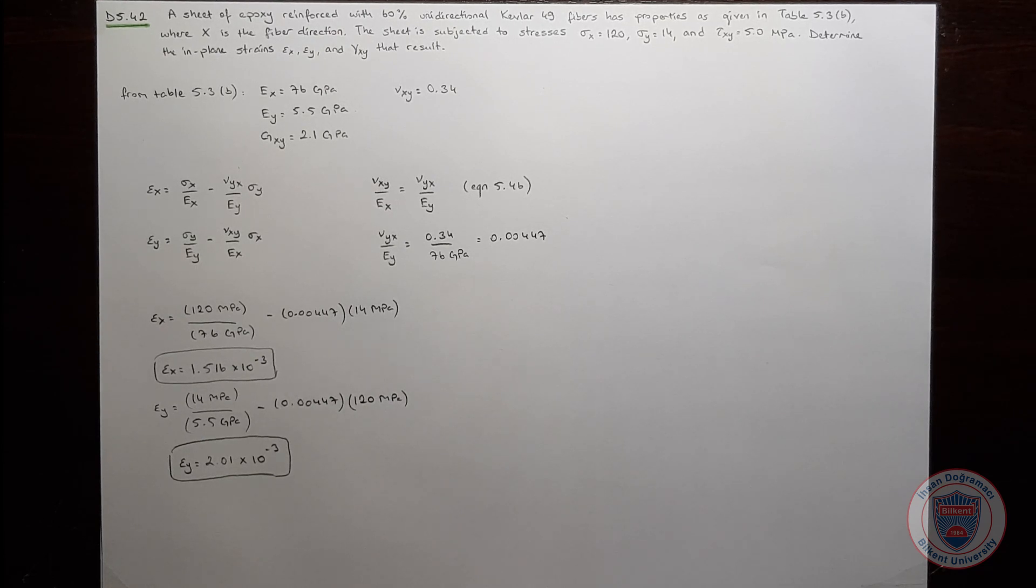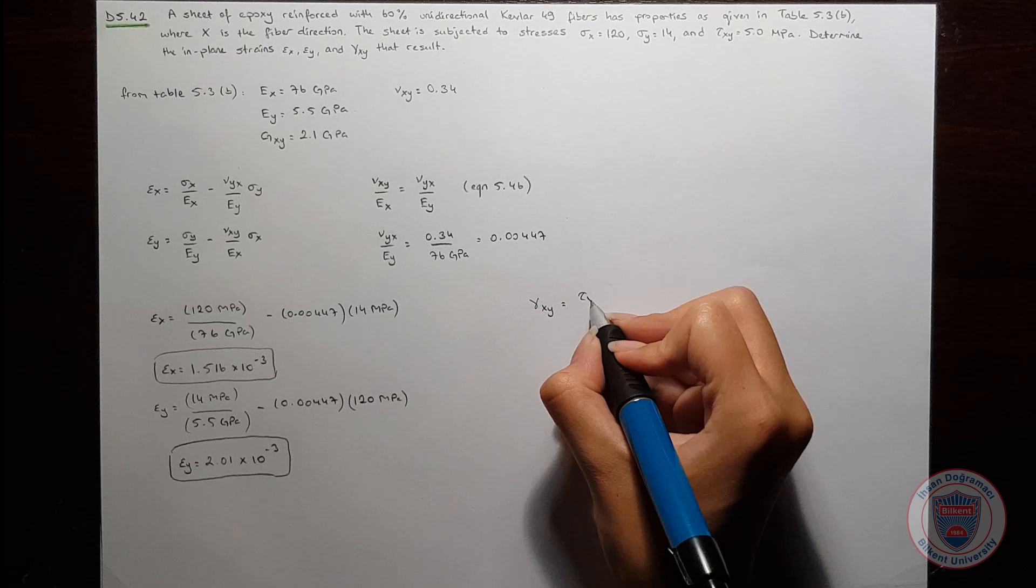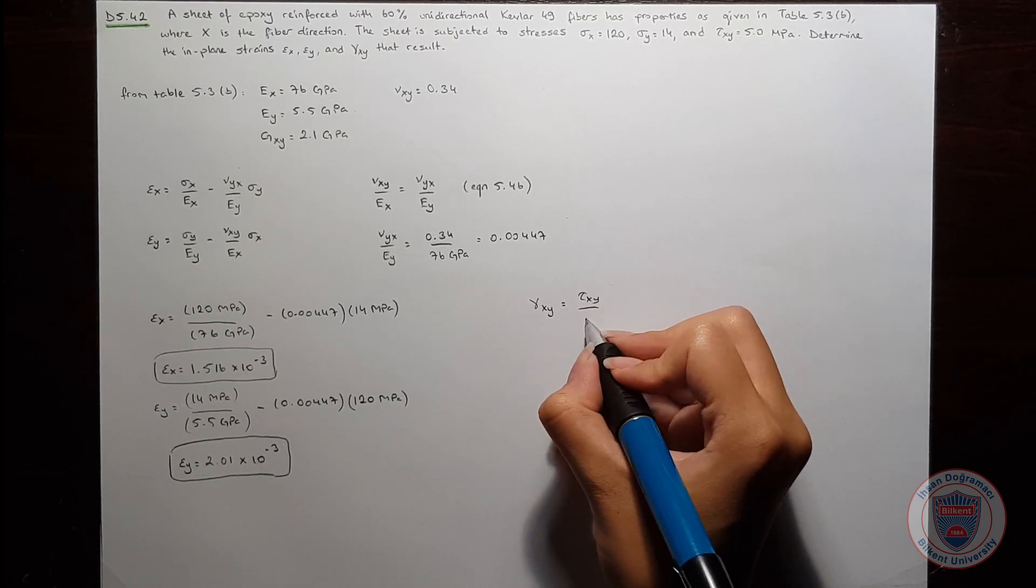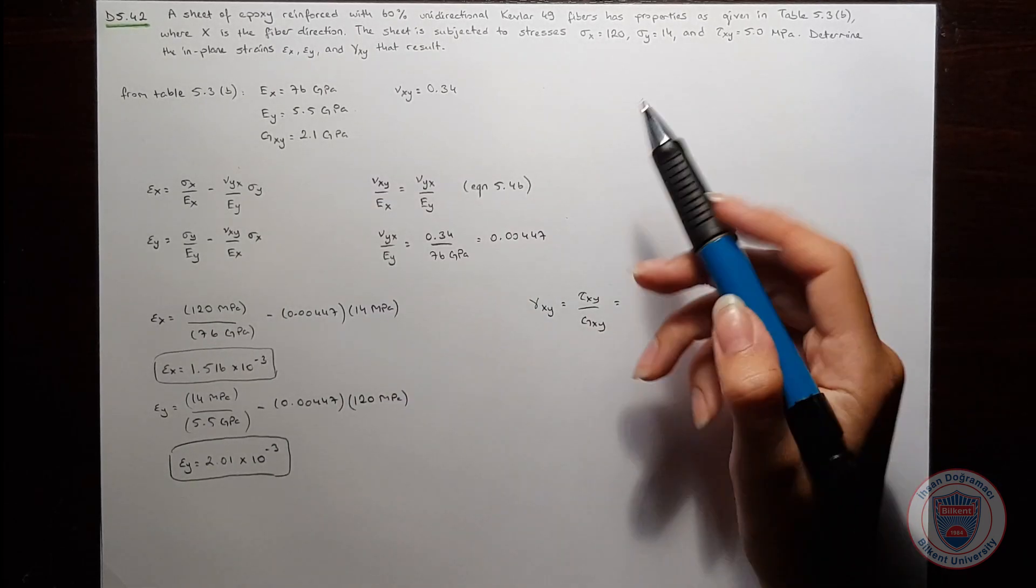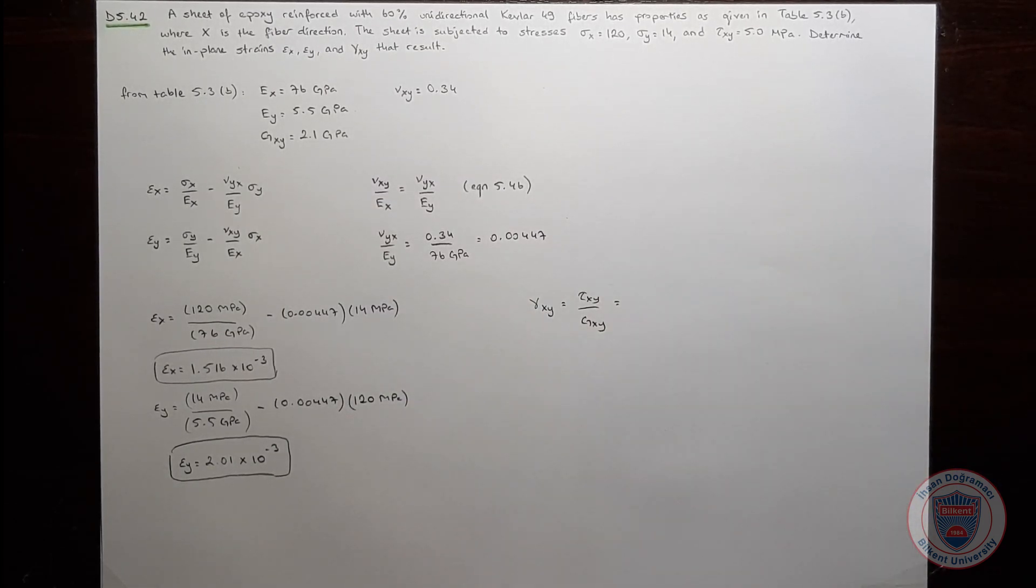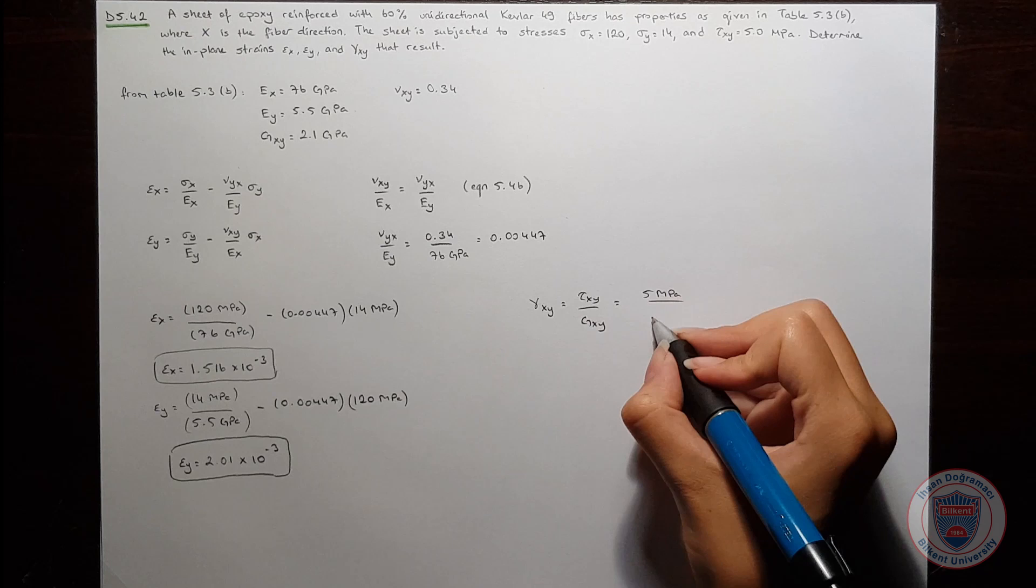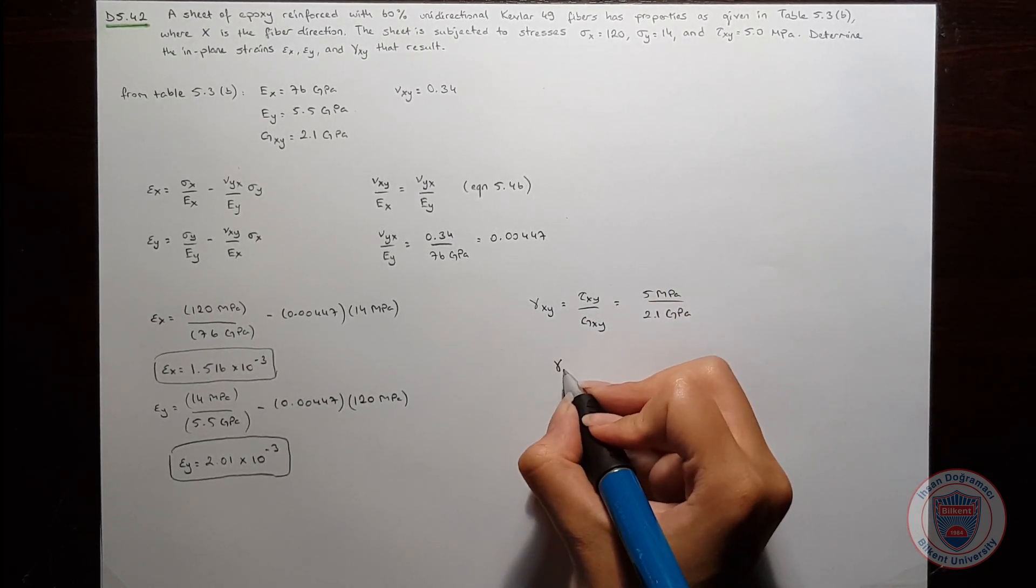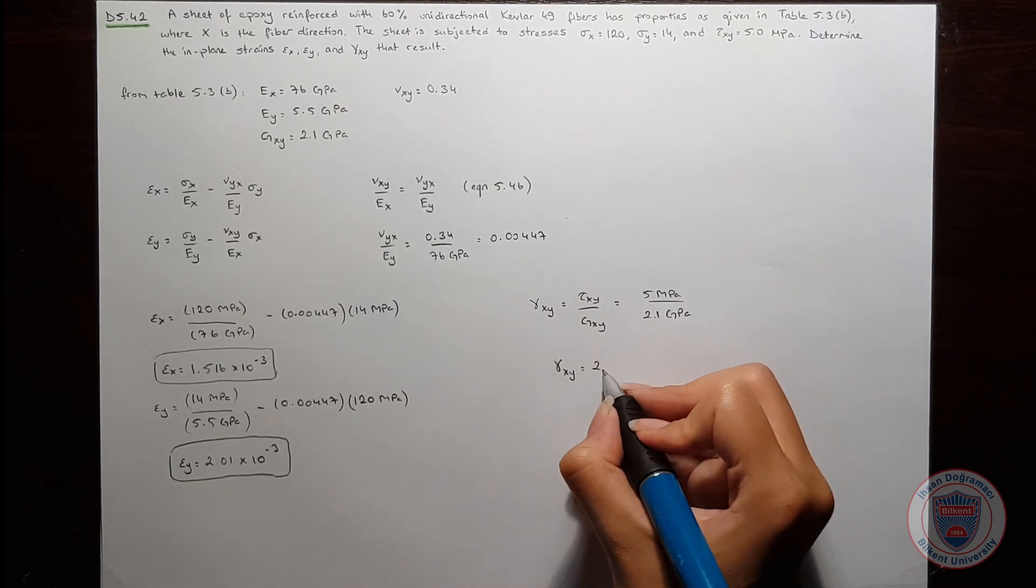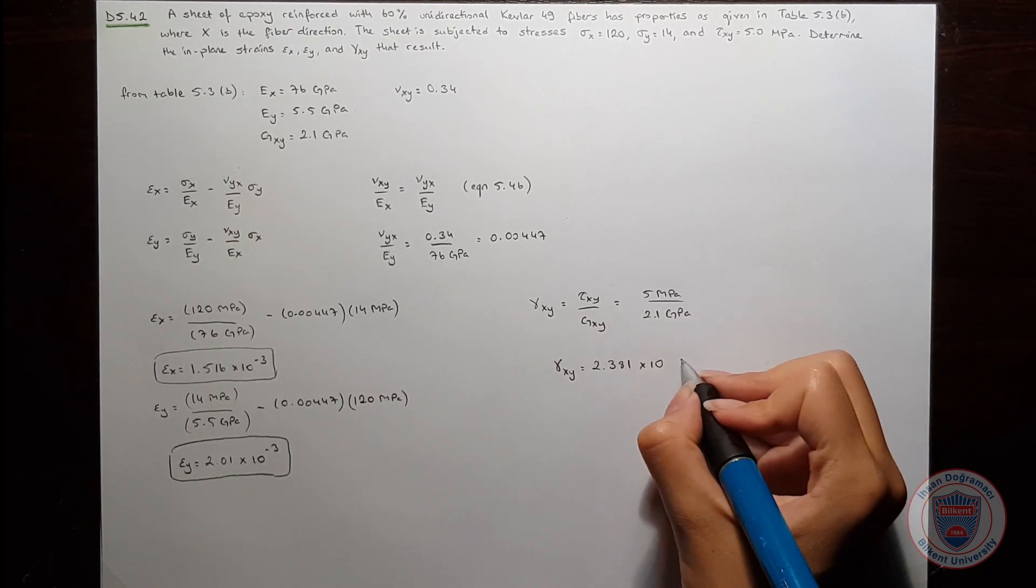Now, let's find the shear strain. We know that gamma XY is equal to tau XY over GXY. We already have the data to solve this part. It is 5 MPa over 2.1 GPa, and we have gamma XY equal to 2.381 times 10 to the power of minus 3.